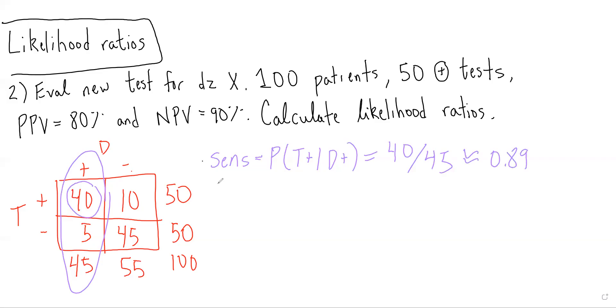For specificity, that is the probability of getting a negative test result given you do not have the disease, which is 45 over 55, or approximately 0.82.